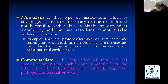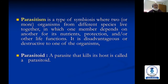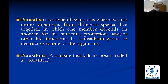In mutualism, the protozoa have the enzymes to convert cellulose to glucose, and the host provides a low redox potential environment. Commensalism is the association of two different species where one is benefited and the other is neither benefited nor harmed — for example, non-pathogenic intestinal protozoa. Parasitism is a type of symbiosis where one member depends on another for its nutrients, protection, and other life functions; it is disadvantageous or destructive to one organism. A parasitoid is a parasite that kills its host.